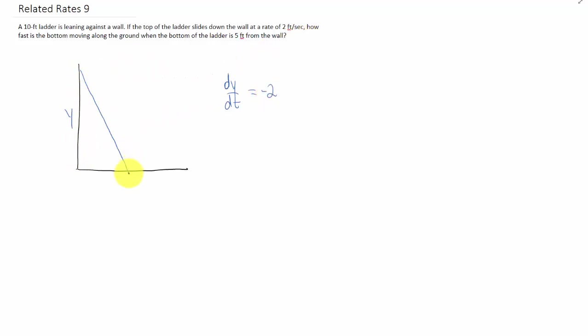What we want is how fast the bottom of this ladder is moving. So if we define this variable here as the distance between the wall and the bottom of the ladder, what we're trying to find is dx/dt, how fast x is changing.